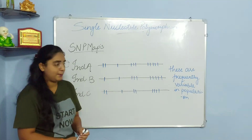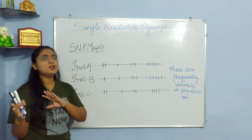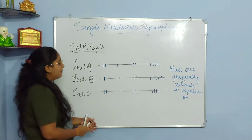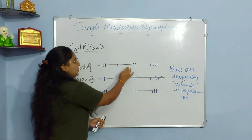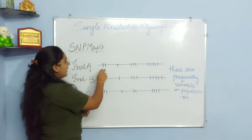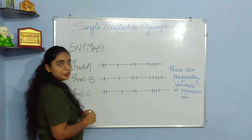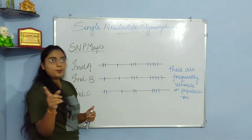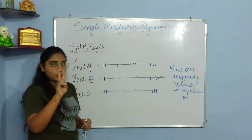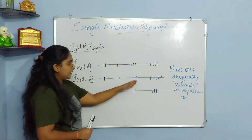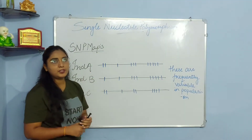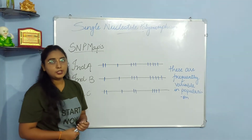Yahan par Single Nucleotide Polymorphism ka bhi map banta hai ke kya, kahan par variation hai throughout the population — woh ek map hai Single Nucleotide Polymorphism ka. Ab ek example dekhte hain: Individual A, B aur C hain. Yahan jo dashes dikha raha hai, woh nucleotides hain present over a DNA sequence. Individual A mein do nucleotide present hain, phir ek, phir teen, phir paanch. Lekin jab individual B mein dekhte hain toh usi position pe sirf ek nucleotide present hai — ek nucleotide na present hone ki wajah se bohot bada difference hum dekhte hain through the progeny, through the individuals.